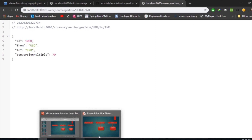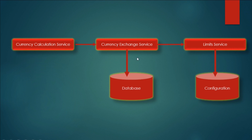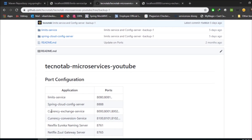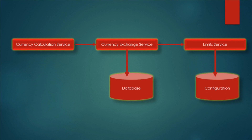The next step is that the currency calculation service will call this currency exchange service, which will have different instances running on different ports — 8000, 8001, 8002, and so on. Currently only one instance is configured on port 8000. Now we'll create multiple instances and see how to do that.